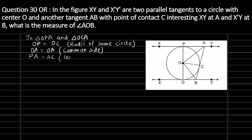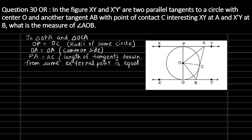PA equals AC because the length of the tangent drawn from the same external point is equal. So PA is equal to AC. We have got all three sides equal, so by Side-Side-Side congruency we can say triangle OPA is congruent to triangle OCA.